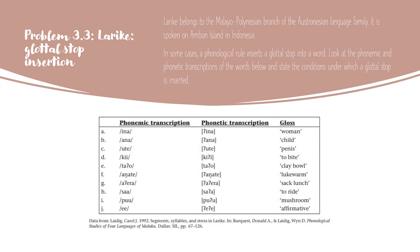Problem 3.3 asks you to think about syllables. In our last two examples, we dealt with aspiration, which tends to happen in the onset of a syllable, particularly in English. Larike belongs to the Malayo-Polynesian branch of the Austronesian language family. It is spoken on Ambon Island in Indonesia — a collection of islands with a lot of linguistic variety. In some cases, a phonological rule inserts a glottal stop into a word. Look at the phonemic and phonetic transcriptions of the words below and state the conditions under which a glottal stop is inserted.